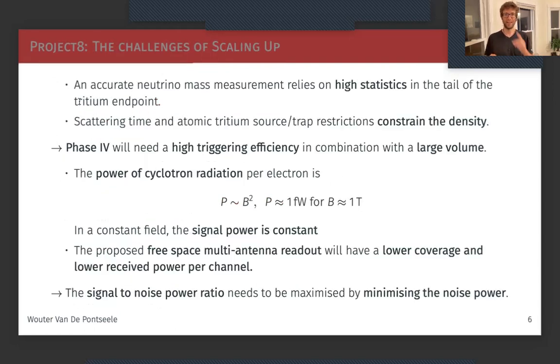I talked about challenges of scaling up this experiment. We're trying to measure the tail of this electron kinetic energy with high statistics. At the same time, our electrons will scatter and we are restricted in how dense our source gas can be because we need to trap it. This restricts the density that we can use. So we will need a very high trigger efficiency and a large volume to acquire these high statistics.